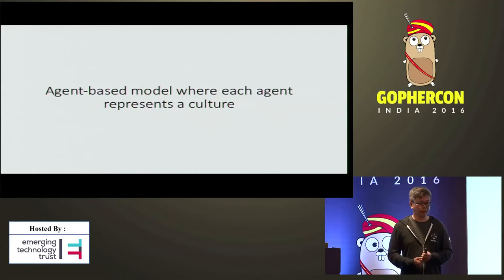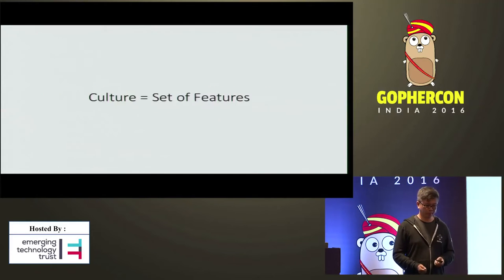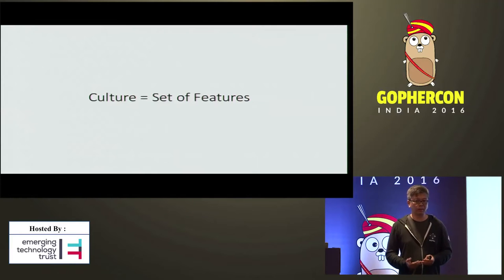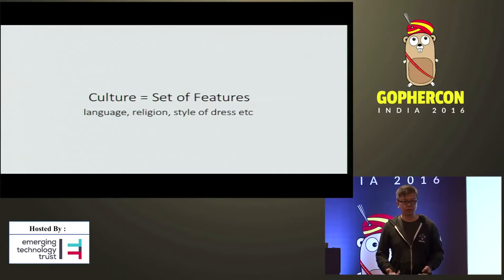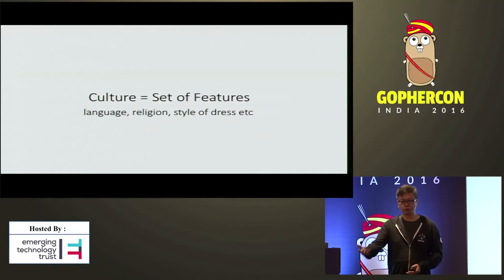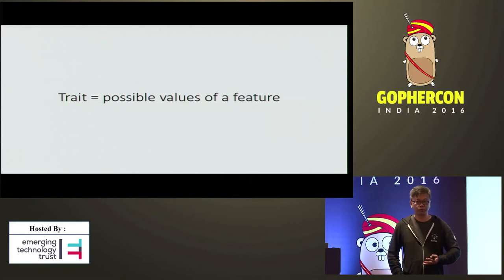What I'm going to do is an agent-based model where every agent represents a culture. Culture here means a set of features — things like language, religion, how you dress, what kind of food you eat, whether it's spicy, whether you drink alcohol, and so on. Traits are the possible values of a feature.